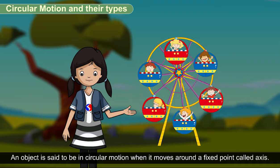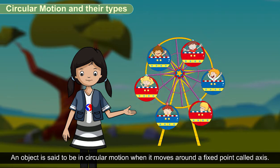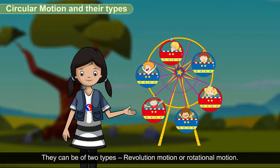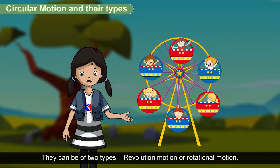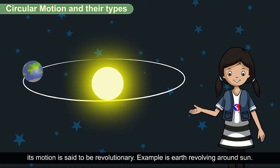An object is said to be in circular motion when it moves around a fixed point called axis. They can be of two types: revolution motion or rotational motion. When an object changes its position while moving in a circular path, its motion is said to be revolutionary. Example is earth revolving around sun.